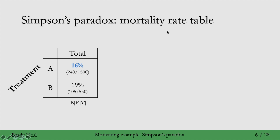Here is what your data looks like at the treatment level. Among people who were given treatment A, 16% of them died — that's 240 people out of 1,500. Among people who got treatment B, 19% of them died. So just looking at this, it seems like treatment A is doing a bit better than treatment B — about 3% fewer people die.